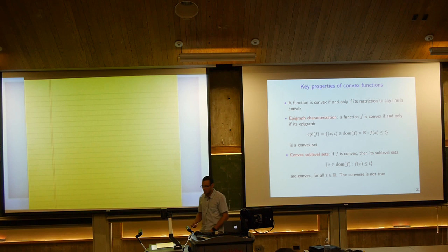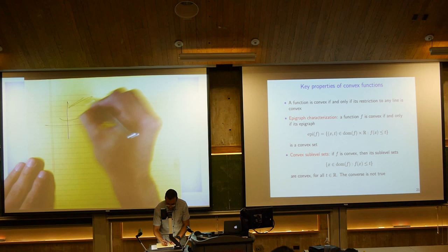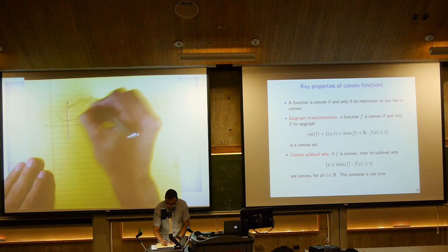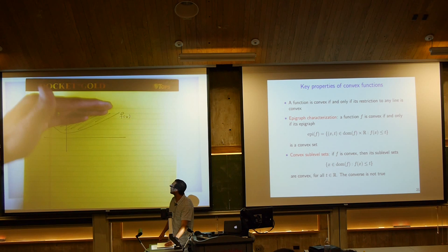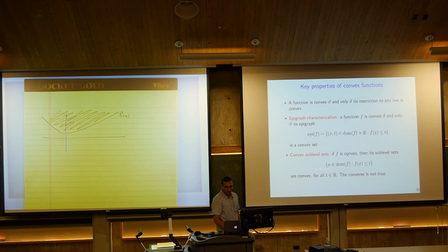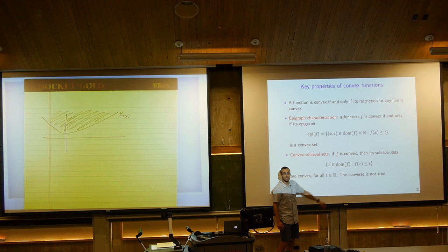The epigraph is the set you get by taking the graph of the function and everything above. If this is f(x), the epigraph is everything that lies on the graph and above. Now, convex sublevel sets are a necessary condition for convexity but not sufficient: if f is convex, then for any t, the sublevel set {x : f(x) ≤ t} is a convex set.